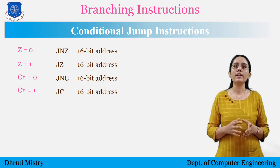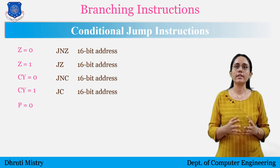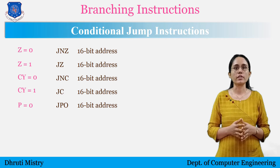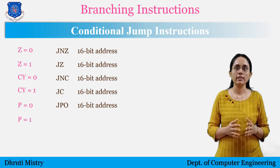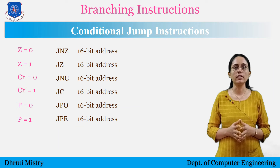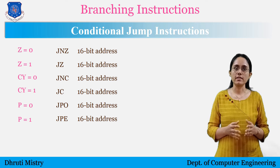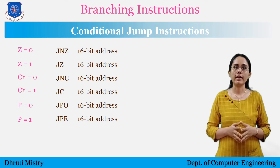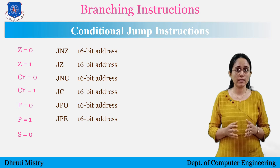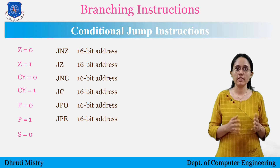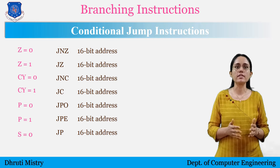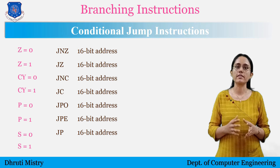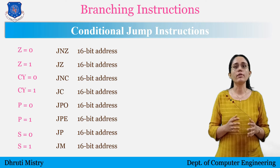Now for the parity flag: if parity is odd, meaning it is 0, then the 'Jump If Not Parity' instruction is used. Next is the sign flag: if the result is positive, meaning the sign flag is 0, then the 'Jump If Positive' (JP) instruction is used. And if the result is negative, meaning the sign flag is 1, then the 'Jump If Minus' instruction is used.